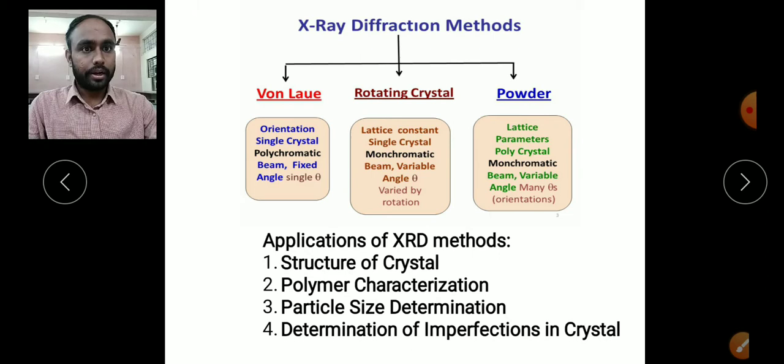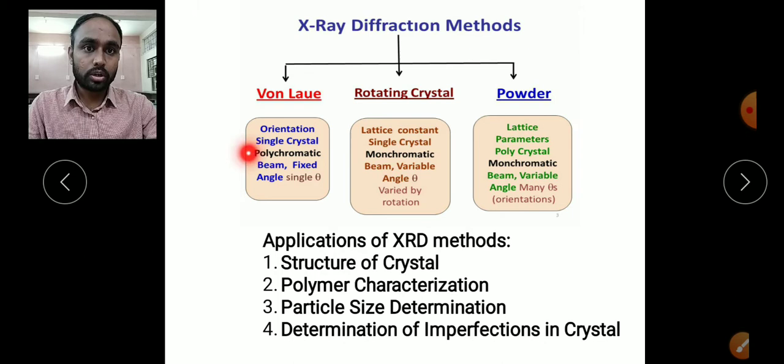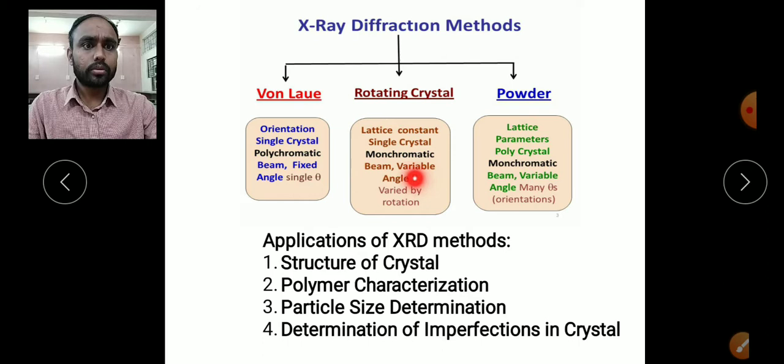The rotating crystal method is used for single crystals with monochromatic X-rays, but the restriction is that you must have a monochromatic X-ray beam, which is not required in the Laue method — that is one advantage. In the rotating crystal method, the angles are variable; different angles are allowed for the X-ray beam when it is incident on the crystal. The last method is the powder method.